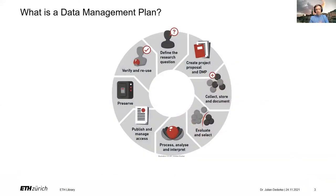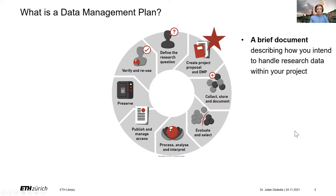Let's get started with what a data management plan actually is. At the ETH library, we encourage everyone working in a data-driven research project to think about their data as following a life cycle throughout their project, starting from the creation of the project proposal, moving on towards collecting, storing, and documenting research data, later on processing, analyzing, and interpreting it, and finally publishing not only papers but also data sets, and preserving research data. A data management plan is a brief document that basically describes how you intend to handle research data within that project.